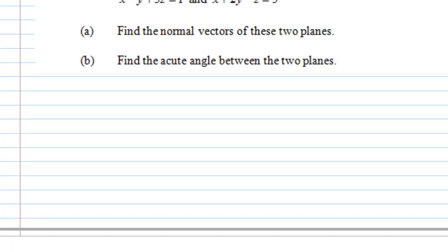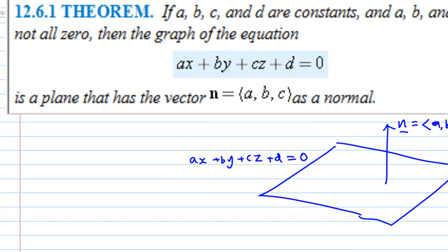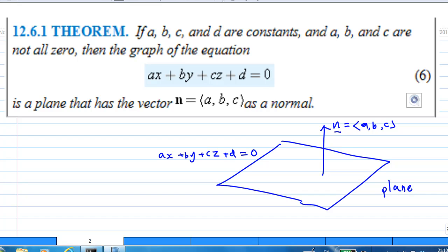To recall, this is what Howard Anton, Chapter 12, Section 6.1 theorem says: if you have an equation of a plane given by ax plus by plus cz plus d equals 0, then the normal to the plane is n equals abc.